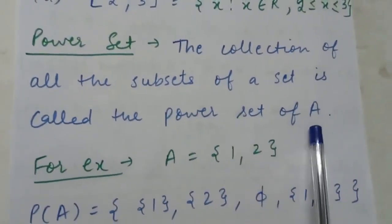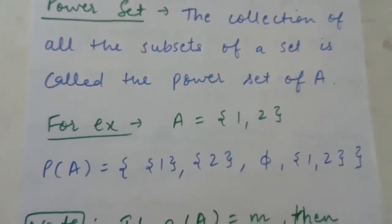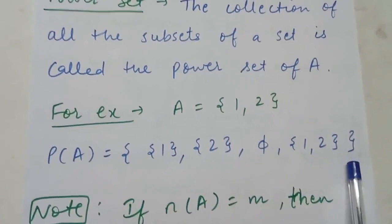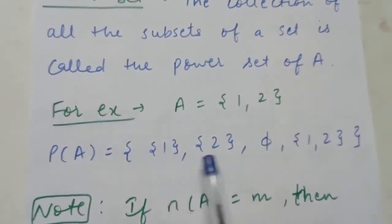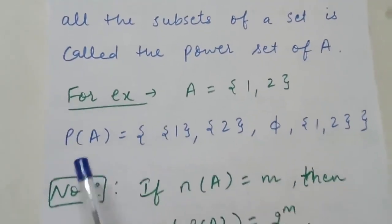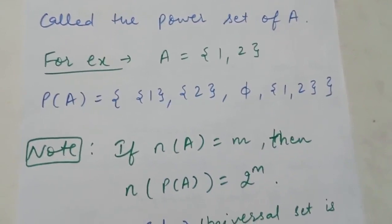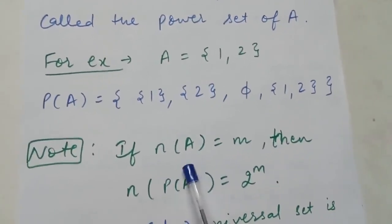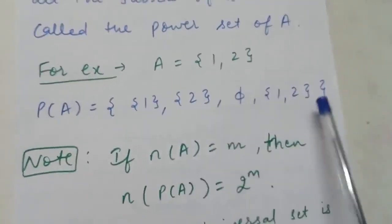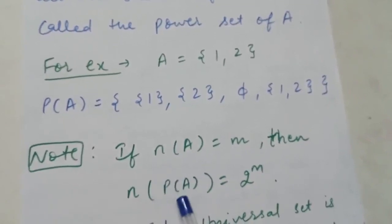Now comes the power set. The collection of all the subsets of a set is called the power set of that set. For example, if A = {1, 2, 5}, the power set P(A) is the collection of all subsets of A: {φ, {1}, {2}, {5}, {1,2}, {1,5}, {2,5}, {1,2,5}}. Note: if A has m elements, the number of elements in the power set of A is 2^m, because subsets are the elements of the power set.